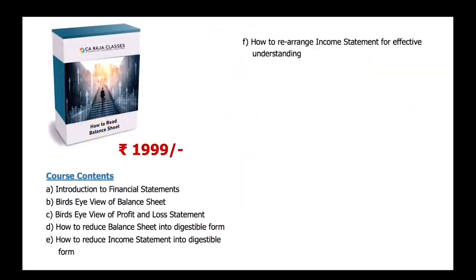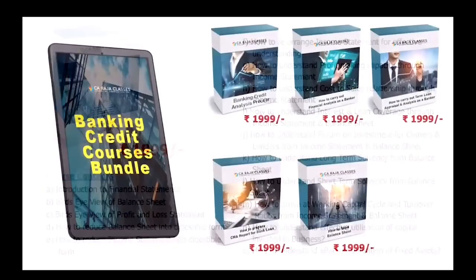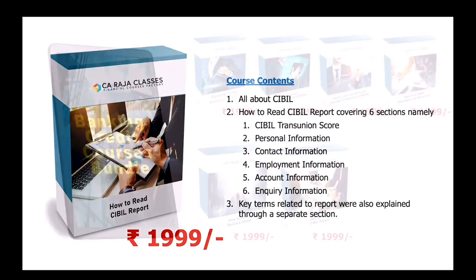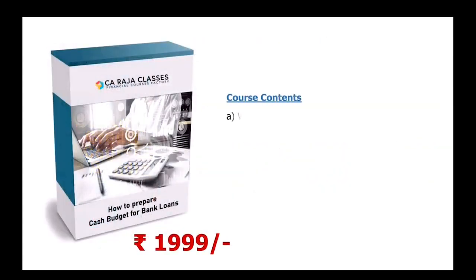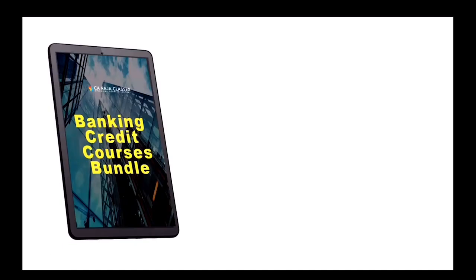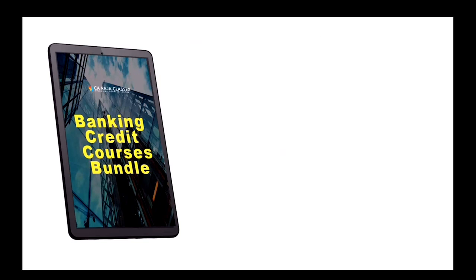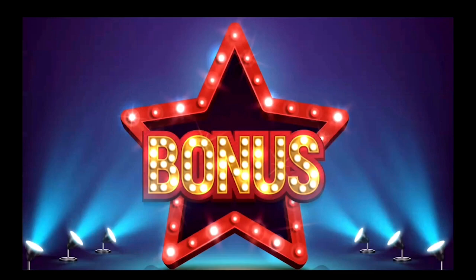Then we have course number five, how to read balance sheet. So if you are a non-finance person, this course will give you complete insight into balance sheet, how to read them, how to interpret them, how to analyze them. Then we have course number six, how to read CMA report. By taking this course, you will get a complete picture of CMA report reading process. Then we have course number seven, how to prepare cash budget for bank loans. This course will help you to understand the concept of cash budget, which is widely used in short term lending, like auto credit facilities, letter of credit and all. So far, I have introduced seven courses of 1999 each. It means seven courses of value 13,993, but you are going to get it only for 2599. And it is not yet over.